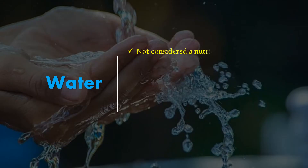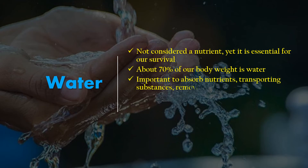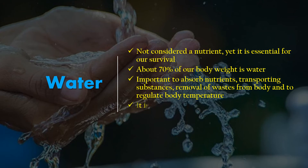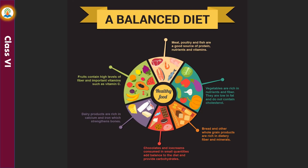Water is not considered a nutrient, yet it is essential for our survival. About 70% of our body weight is water. It is important for absorbing nutrients, transporting substances, removal of wastes from the body, and regulating body temperature. It is recommended that one should drink about 6 to 8 glasses of water. A diet that contains all the different types of nutrients in correct amounts is termed a balanced diet.